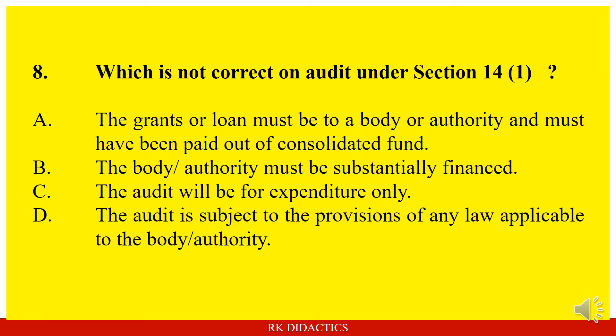Question: Which is not correct on audit under Section 14(1)? Option A: The grants or loan must be to a body or authority and must have been paid out of consolidated funds. Option B: The body or authority must be substantially financed. Option C: The audit will be for expenditure only. Option D: The audit is subject to provisions of any law applicable to the body or authority. Answer: C is not correct because the audit will be for both receipts and expenditure.